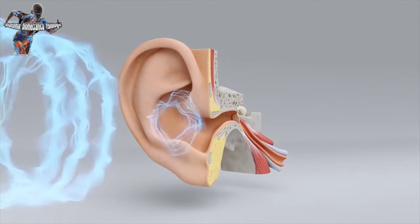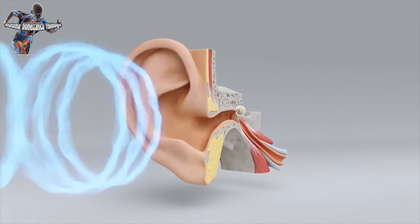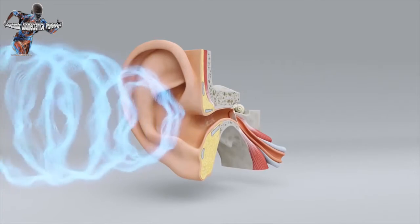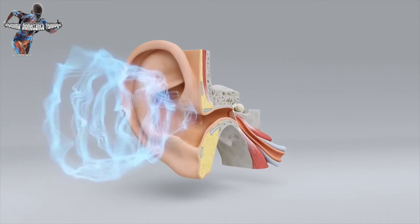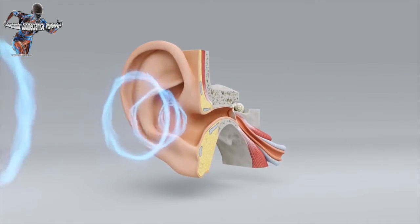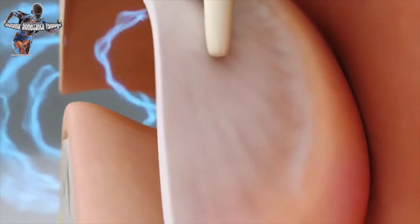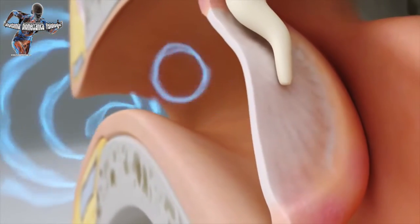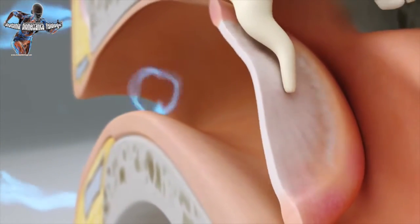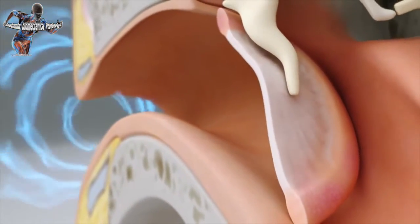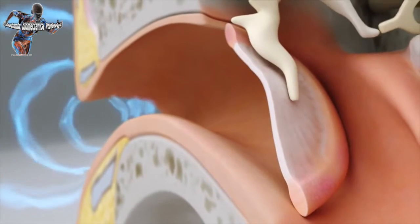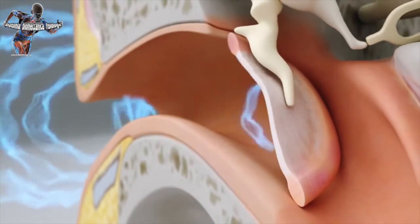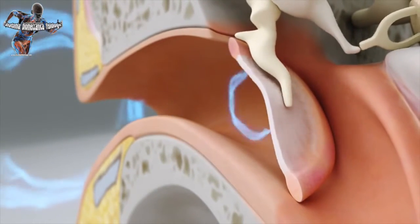The outer ear consists of the auricle and the external auditory canal. The sound is guided through the ear canal to the middle ear. The sound arrives at the eardrum, a flexible circular membrane which starts to vibrate when sound waves strike it. The sound waves are passed on by the movement of the eardrum to the middle ear.